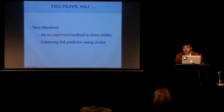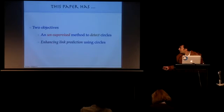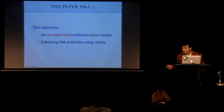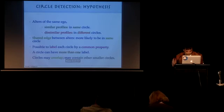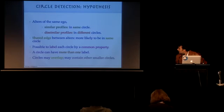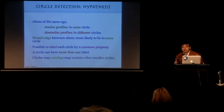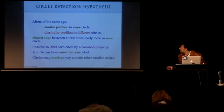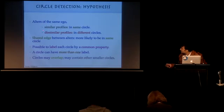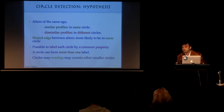This paper has two objectives: one is to devise an unsupervised method to detect circles, and then to identify whether this detection is meaningful by doing co-authorship prediction in future — essentially a standard form of link prediction. The basic hypothesis is that during circle detection we do not use link information; only from the author profile we create and check the similarity of profiles. Through an iterative process we arrive at circle detection. Authors who have similar profiles should be in the same circle.